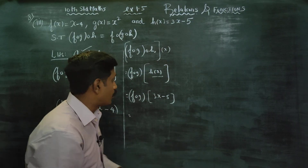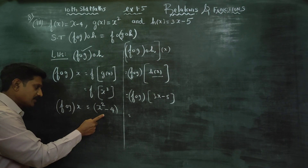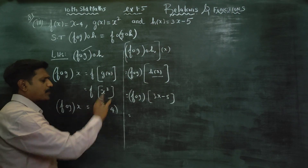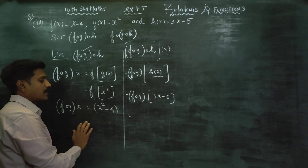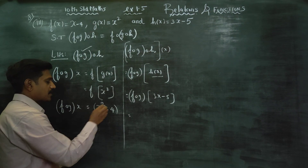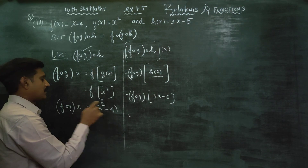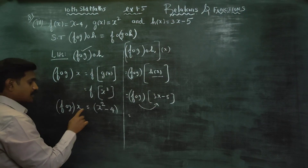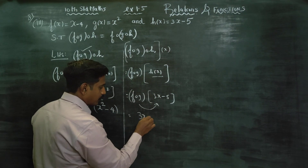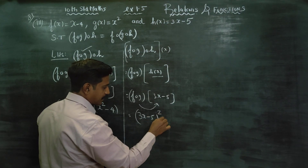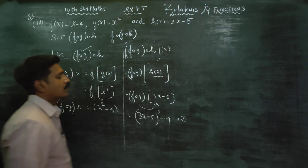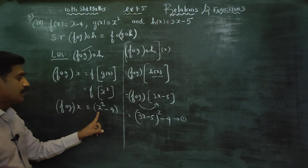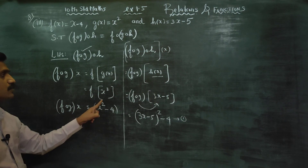That is combined operations. f∘g is given with a rule. f∘g: whatever comes in, square it then minus 4. So f∘g of x gives x squared. Whoever comes in, write it and minus 4 — so f∘g of x = x² minus 4. That is the first answer. f∘g is ready; keep that result: for any input, f∘g gives x² minus 4.